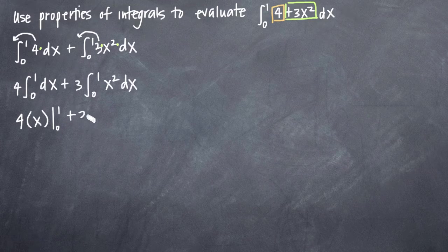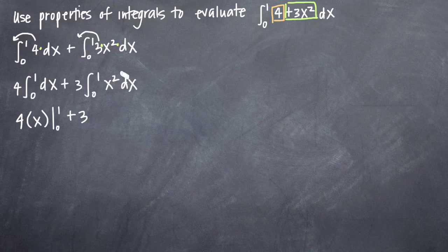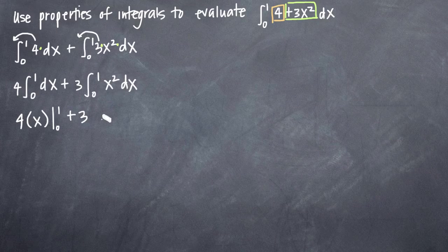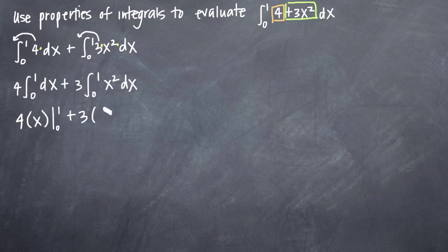Then over here we get plus 3. The integral of x squared—when we have a power like this, x squared—we just add 1 to the exponent, so 2 plus 1 gives us 3.